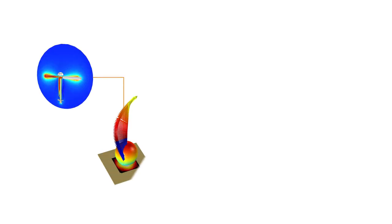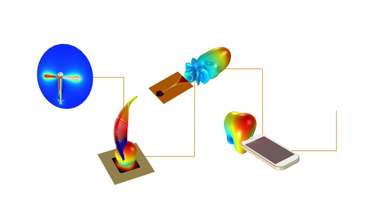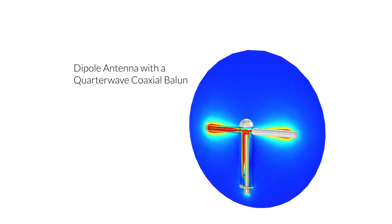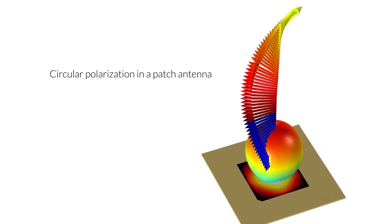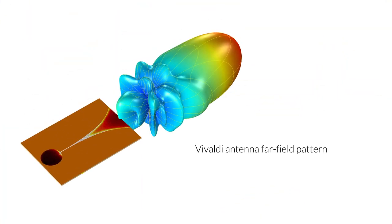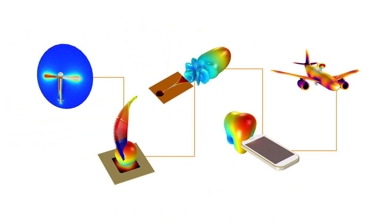An antenna is any structure that can radiate electromagnetic energy, typically for communications purposes. Some common antennas include a dipole antenna, a patch antenna, a Vivaldi antenna, an antenna on a cell phone, and even an antenna on an airplane. All of these types of models can be built following the same general modeling procedure.